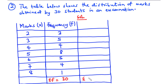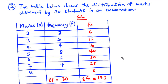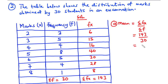Now let's find the summation of fx. 2 times 3 is 6, 3 times 5 is 15, 4 times 4 is 16, 5 times 8 is 40, 6 times 5 is 30, 7 times 4 is 28, and 8 times 1 is 8. When you add up all these values, you get 143. So the mean, which is summation of fx divided by summation of f, is 143 divided by 30, which equals 4.7667. To two decimal places, the mean is 4.77.